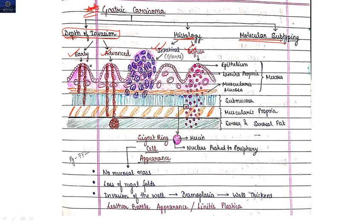Coming to depth of invasion: if the tumor has invaded till submucosa, that will be coming under early gastric carcinoma. If it has invaded serosa, subserosa, fat, or muscularis, it will be coming under advanced gastric carcinoma.